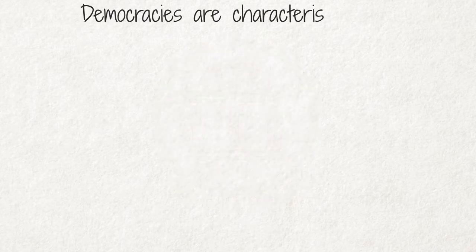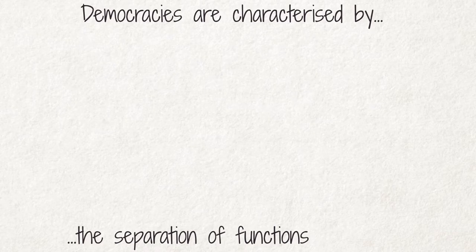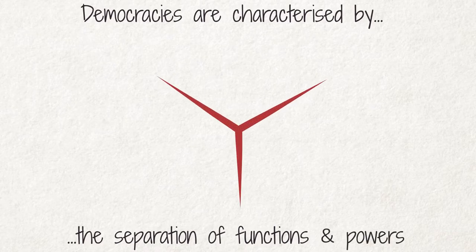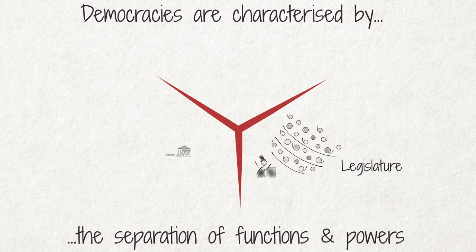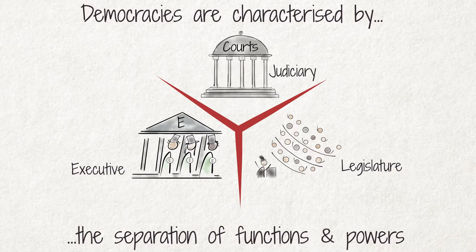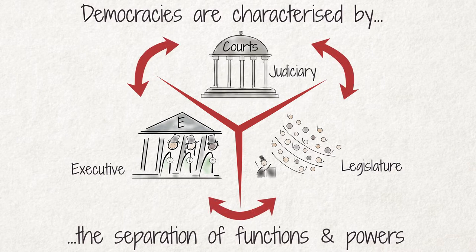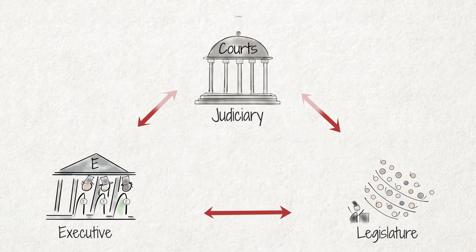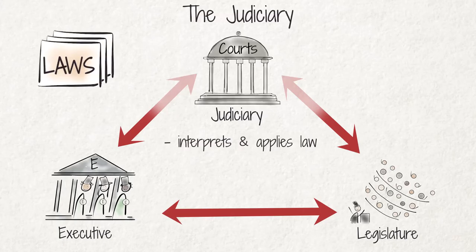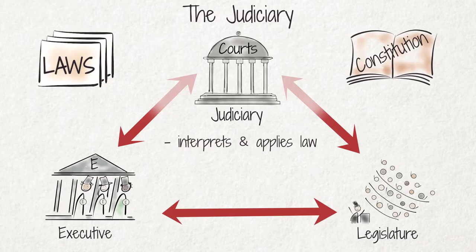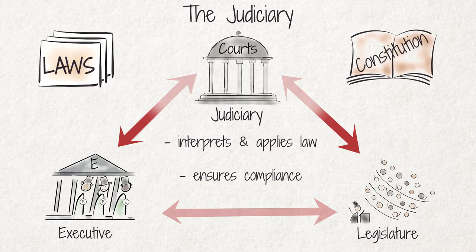Democracies are characterized by the separation of functions and powers between the three branches of government: the legislature, the executive, and the judiciary. Each branch checks the power of the other two so that there is a balance of power between them. The judiciary interprets and applies the law, including the constitution, and ensures that the other two branches comply with it. In this way, the judiciary checks the exercise of power of the legislature and the executive.